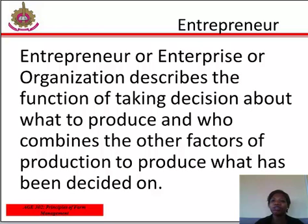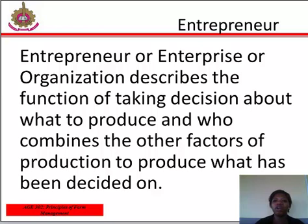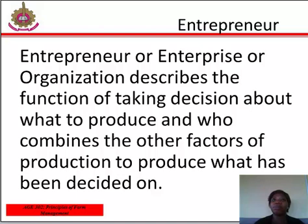Coordination of other factors: the entrepreneur combines and coordinates other factors of production in order to achieve meaningful production. Efficient management: the entrepreneur plays the role of maintaining efficient management in production lines. Miscellaneous functions include dissemination of price of goods produced, ensuring good working conditions for the workers, determining the scale of production, whom to employ, and when to retire. All these functions performed by entrepreneurs make them different from labor.